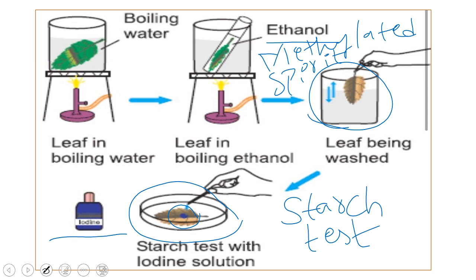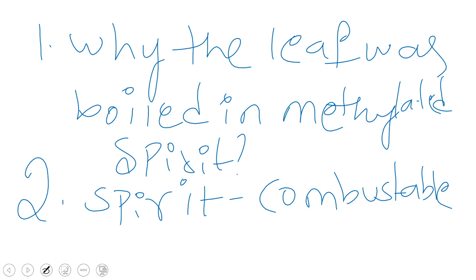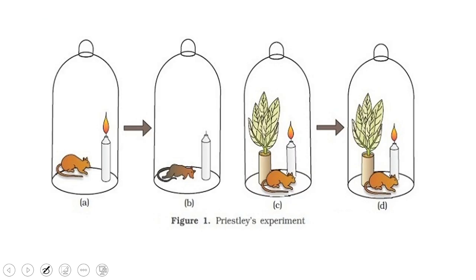This lab activity confirms that leaves are the food factories of the plant - leaves are preparing food for the plant. The next experiment is the famous one done by Joseph Priestley. He discovered oxygen, and the gas was named oxygen by Lavoisier.